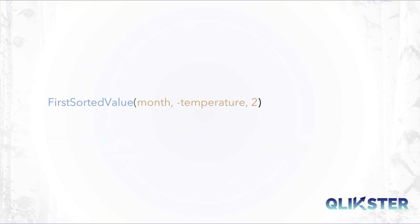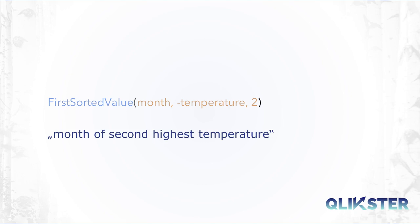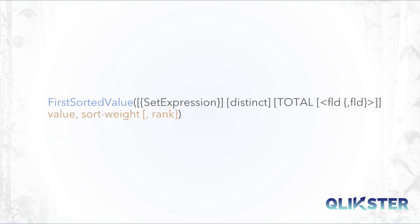By adding a minus sign in front of temperature we get the month of the highest, in this case second highest, temperature. Remember that the complete syntax of the function looked a bit more complicated. The terms set expressions, distinct, and total are arguments to most chart functions.